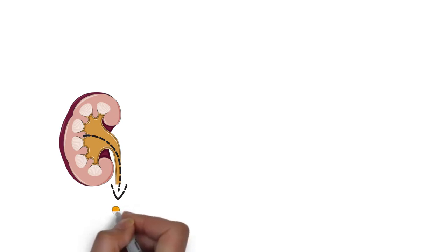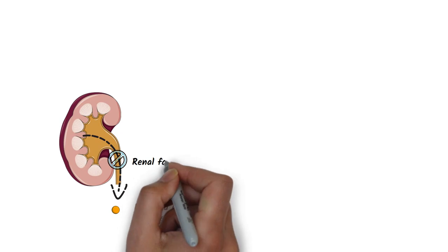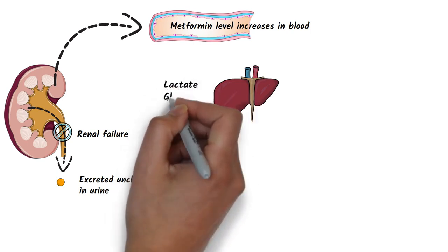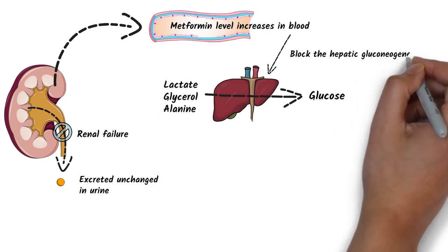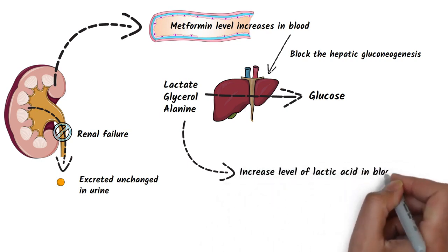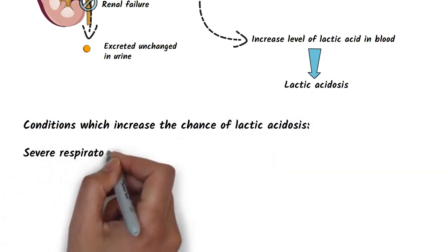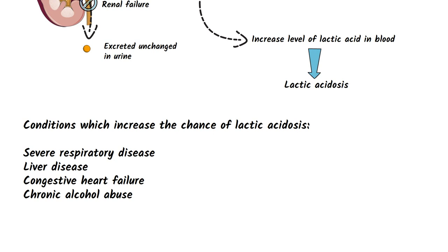The side effect we need to worry about is lactic acidosis. It more commonly occurs in renal failure patients, as metformin is excreted unchanged in urine. In renal failure, the excretion of metformin is decreased and its level increases in blood. The primary action of metformin is to block hepatic gluconeogenesis, whose main substrates are lactate, glycerol, and alanine. Increased metformin levels impair hepatic utilization of lactic acid, increasing lactic acid in the blood and eventually leading to lactic acidosis. Other conditions that increase the chances of lactic acidosis include severe respiratory disease, liver disease, congestive heart failure, and chronic alcohol abuse. Metformin is also contraindicated in those conditions.